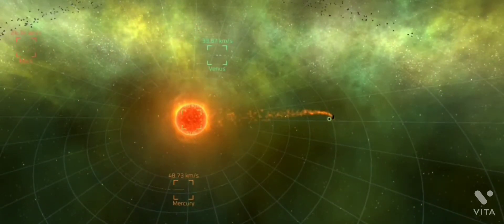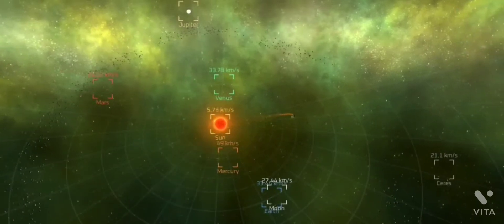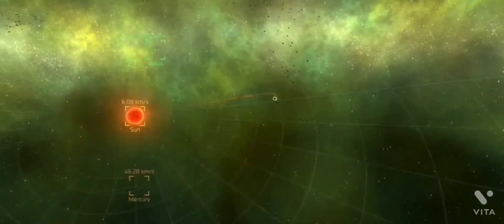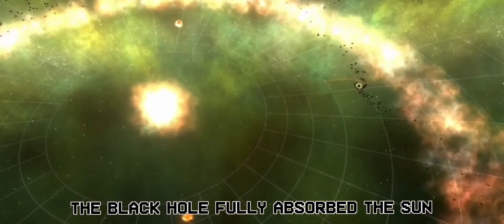Its size is shrinking like a shirt shrunk when it's washed out. The black hole fully absorbed the sun.